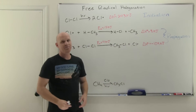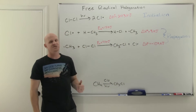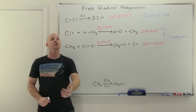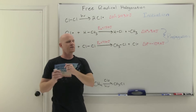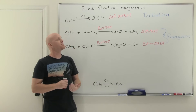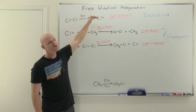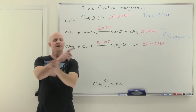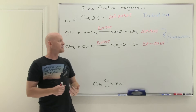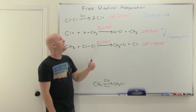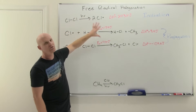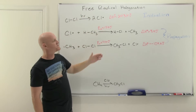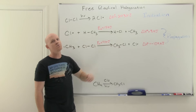Free radical reactions are going to have a single initiation step, followed by two propagation steps, and then termination steps. There is one exception with HBr and peroxide, where there are two initiation steps - but that's a free radical addition, the anti-Markovnikov addition of HBr in the presence of peroxide. For most free radical halogenations, they're going to have a single initiation followed by two propagation steps where product is produced over and over again.